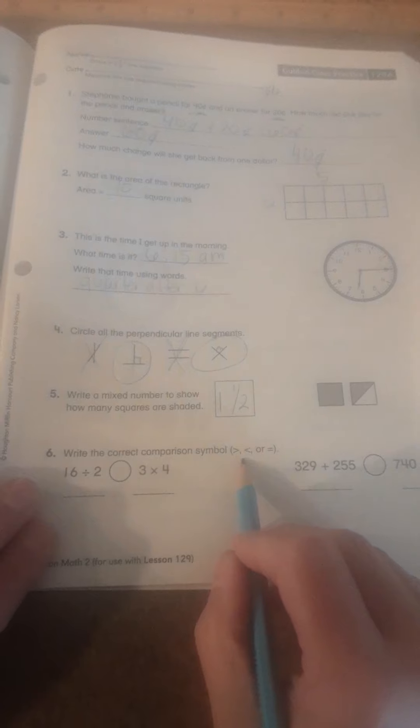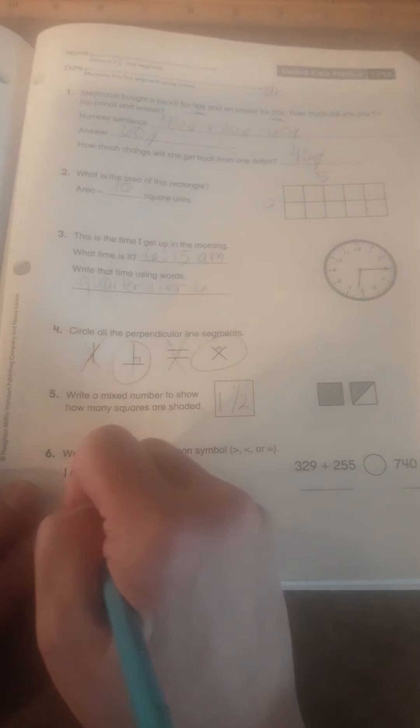So we need to use greater than, less than, or equal. 16 divided by 2 is 8. And 3 times 4 is 12. So 8 is less than 12.